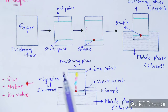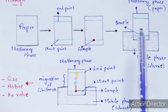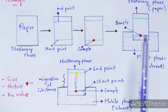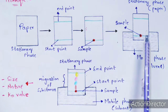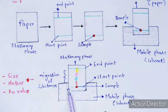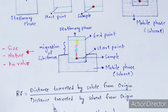To summarize the technique: take a paper (stationary phase), mark start and end points, place the sample on the start point, and dip it into the mobile phase (solvent) — only up to the start point mark. The migration of substances can be observed within five to ten minutes. The main purpose is to find the RF value, calculated as: distance traveled by the solute from origin divided by distance traveled by the solvent from origin.